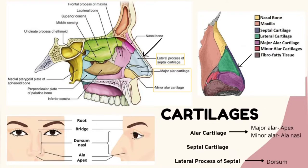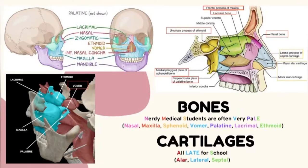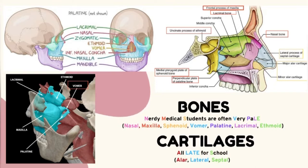The arrows are pointing to the septal cartilage — one thin cartilage on top — and below that is the lateral process of septal cartilage, which forms the dorsum of the nose. To remember all the bones and cartilage, use the sentence: 'Nerdy medical students are often very pale and all late for school.' The first part refers to the bones: nasal, maxilla, sphenoid, vomer, palatine, lacrimal and ethmoid. 'All late for school' refers to the cartilage: alar, lateral and septal.